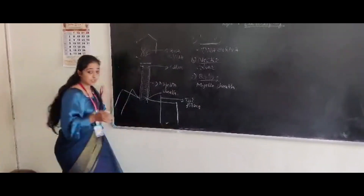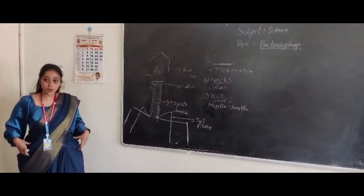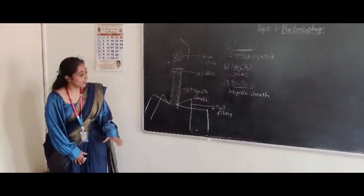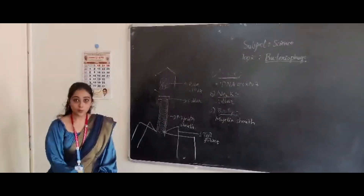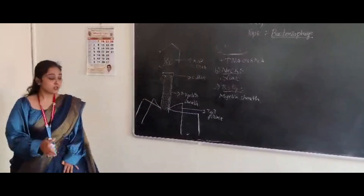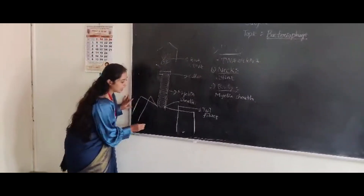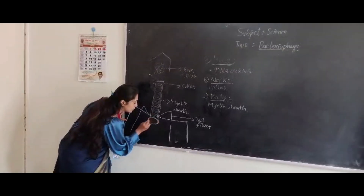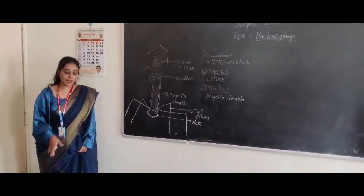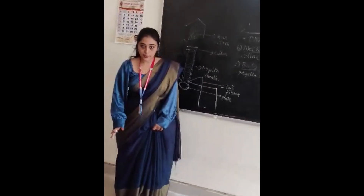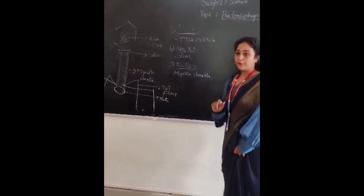The head is connected to the neck, the neck to the body, and the body is connected to tail fibers — just like our legs. Our legs help in movement, and similarly these tail fibers help in the movement of the bacteriophage. Finally, it has a plate-like structure called the base plate, which is useful for the landing of the bacteriophage from one place to another.